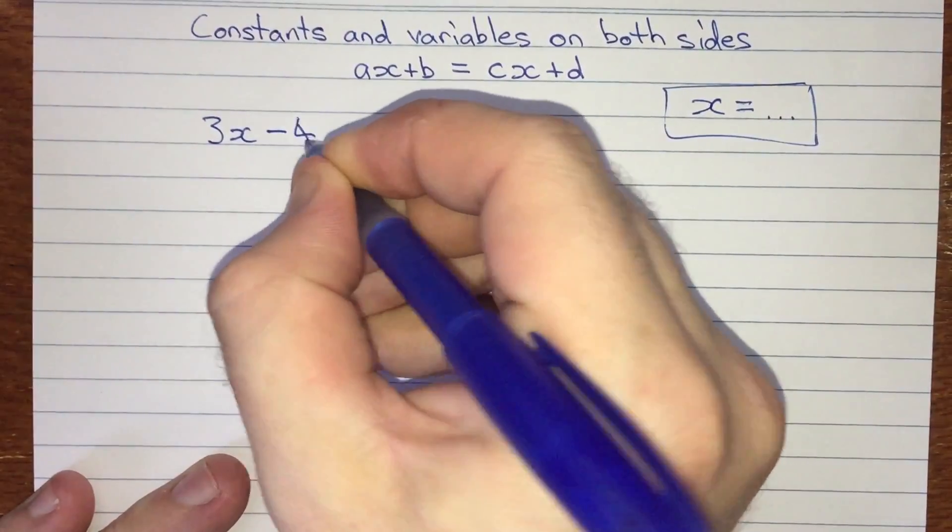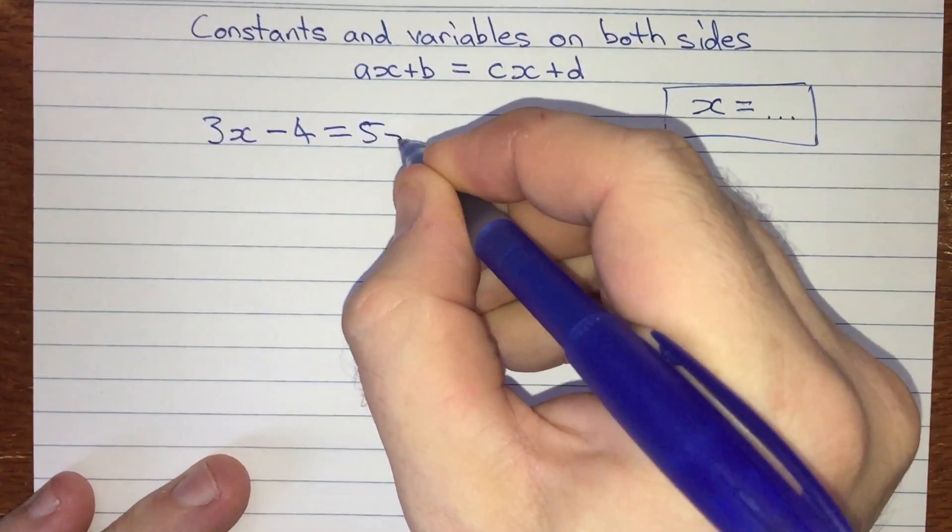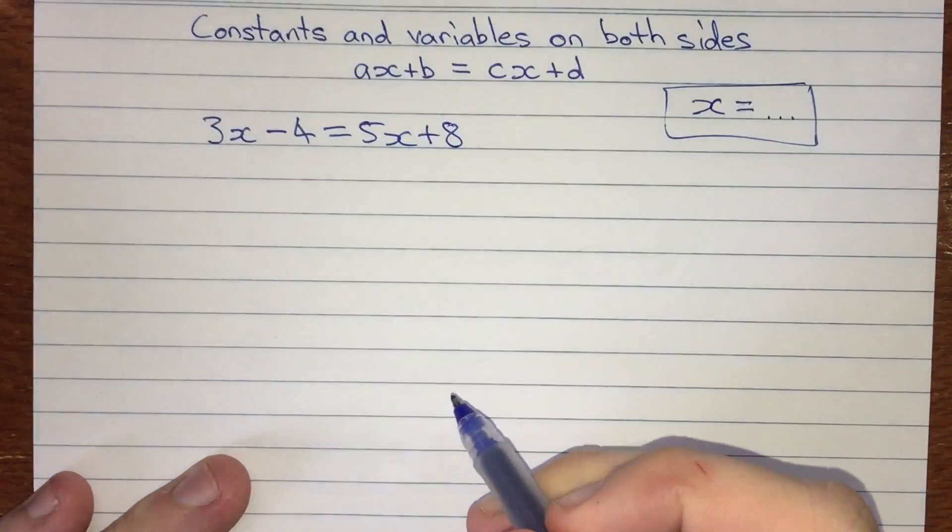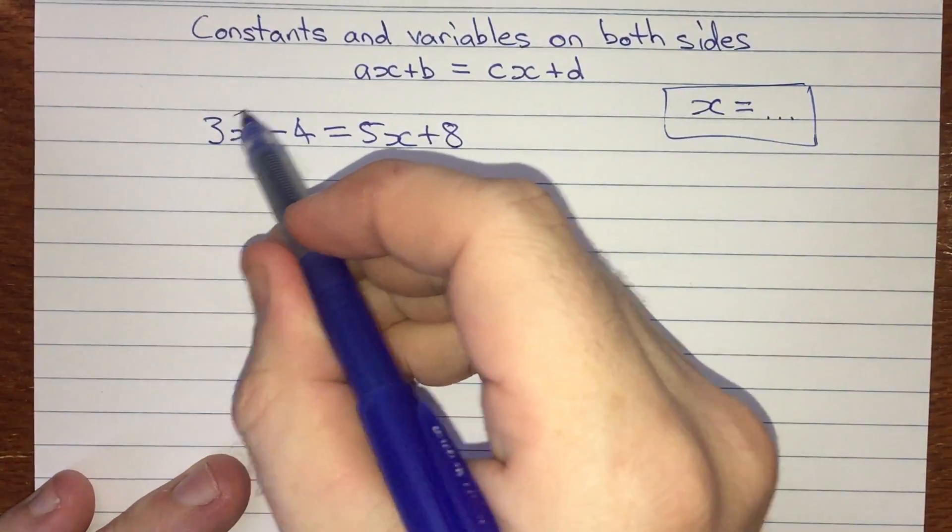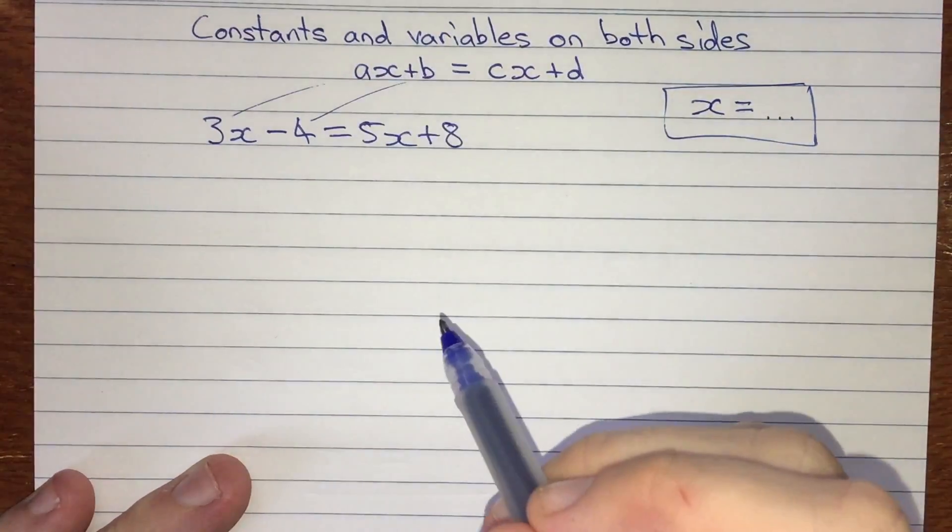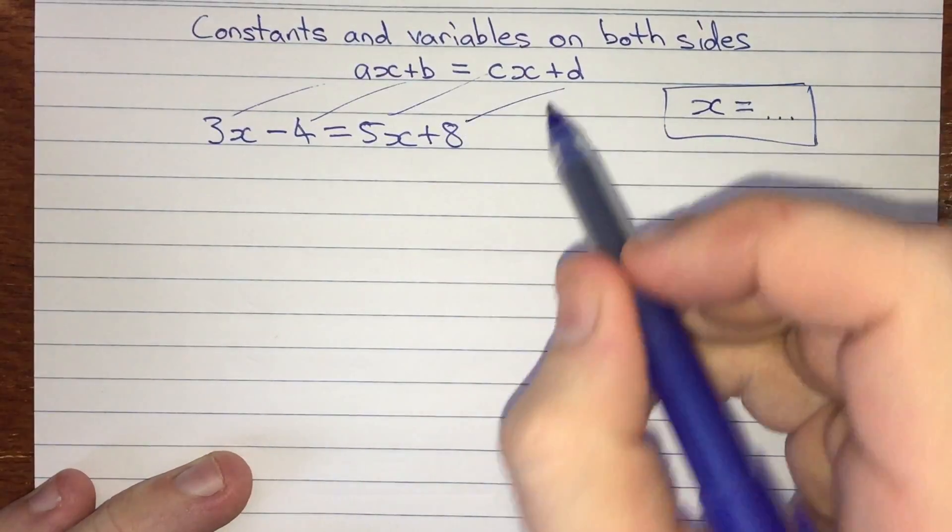Let's say we've got 3x minus 4 is equal to 5x plus 8. Now you can see this fits that general formula. 3 is a, minus 4 for b, 5 for c, and 8 for d.